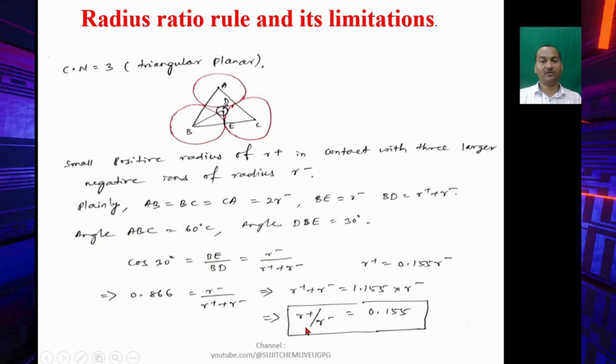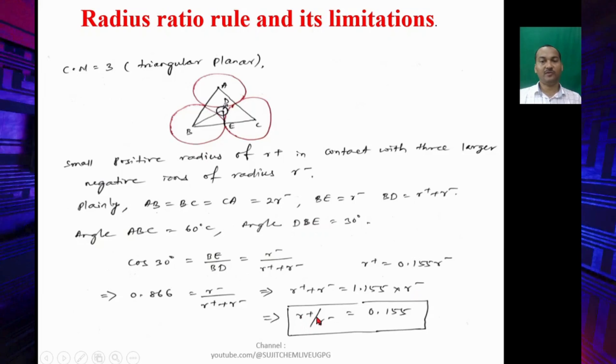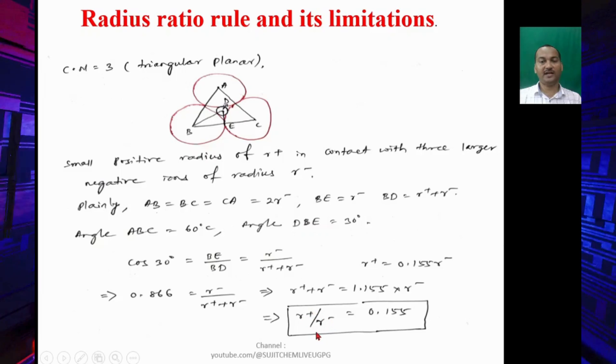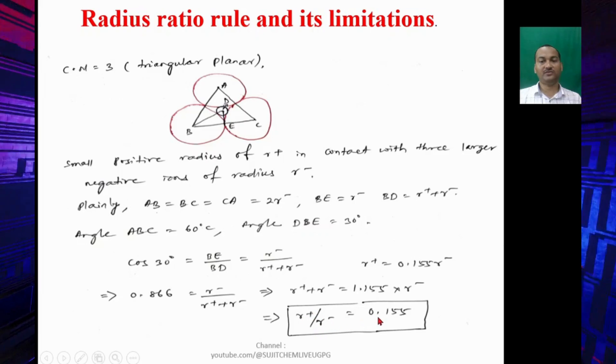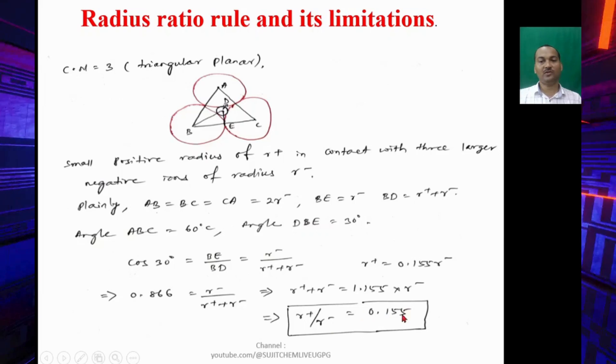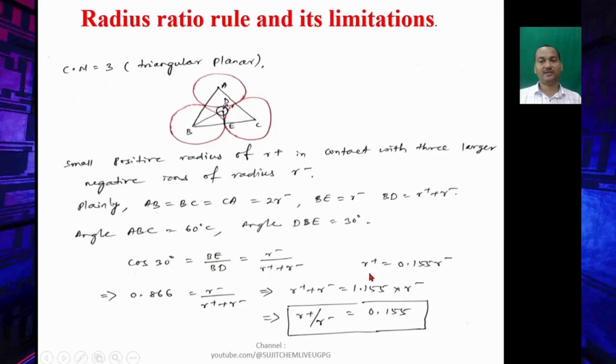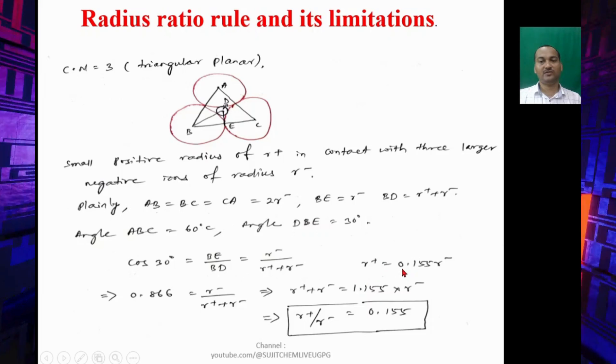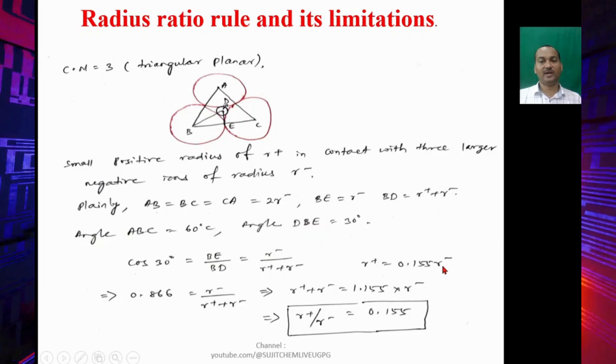If you find out R+/R-, R+ divided by R- should be 0.155, or you can say R+ = 0.155 times R-.